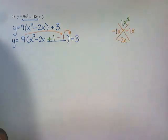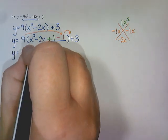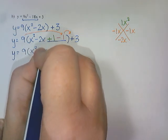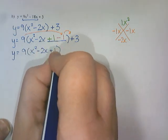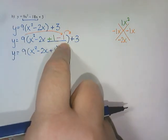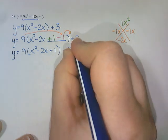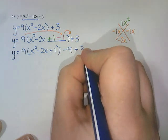Okay, so this is going to be y = 9(x² - 2x + 1). Those are the things that I want inside the bracket. And then we're going to do 9 times -1. So 9 times -1 is -9. And then plus 3.